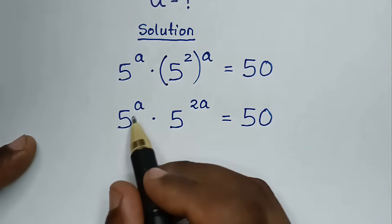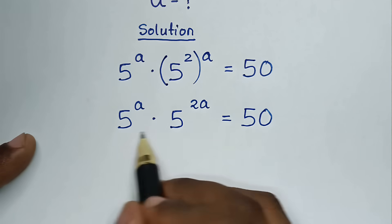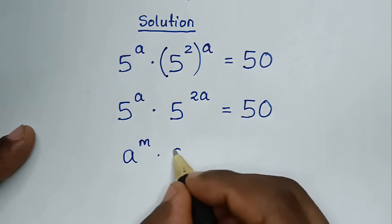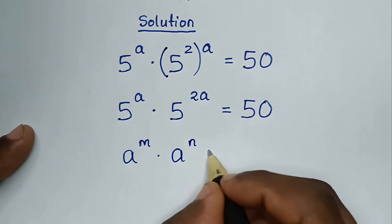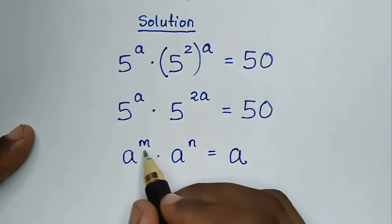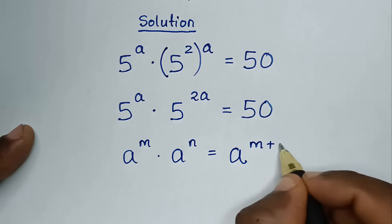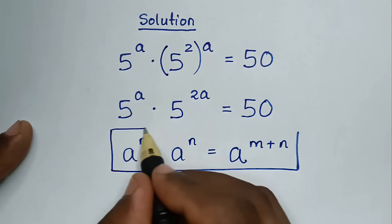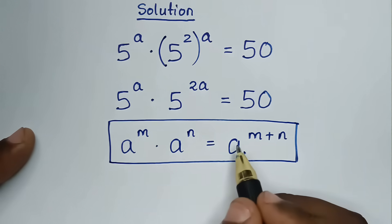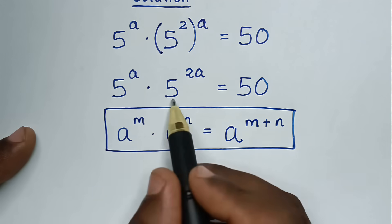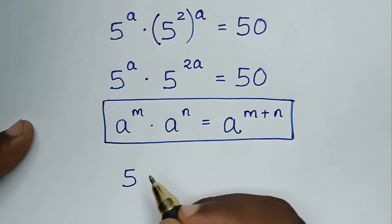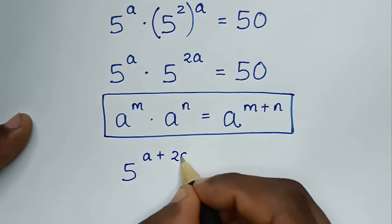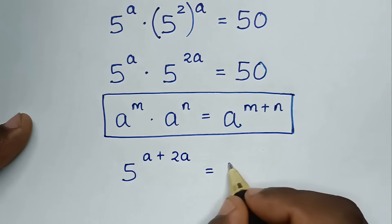From here, 5 power a times 5 power 2a is in the form of the rule: a power m times a power n is equal to a power m plus n. So with the same base of 5, we take this power plus this power, giving 5 power of a plus 2a, which is equal to 50.